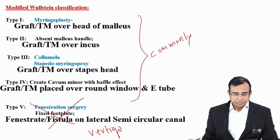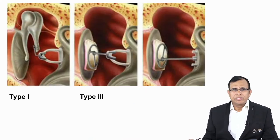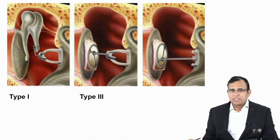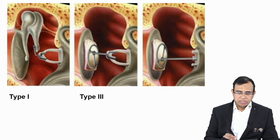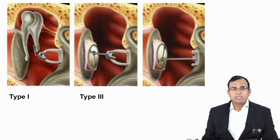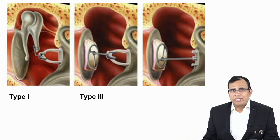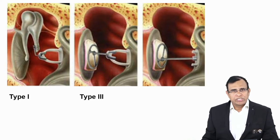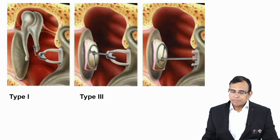They may also show images — for example, if the graft is on the head of the malleus that is Type 1, and if the graft and prosthesis are on the head of the stapes that is Type 3. Sometimes they show images and ask which type of tympanoplasty it is based on the image.